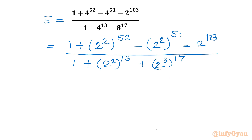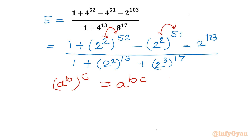Now I will write one most powerful exponent law: a power b whole power c can be written as a power b times c. So we can take the product of these two powers. I can write our expression E as: 1 plus 2 raised to the power 2 times 52, which is 104.